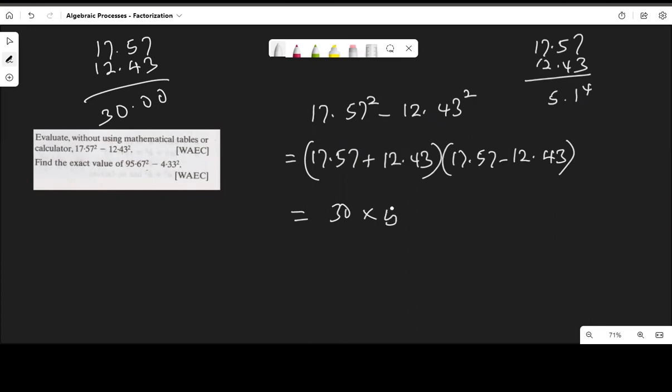Multiply 30 by 5.14. We can simplify this as 3 times 10 times 5.14, which equals 3 times 51.4. Since 3 times 4 is 12, we calculate the final result as 154.2.